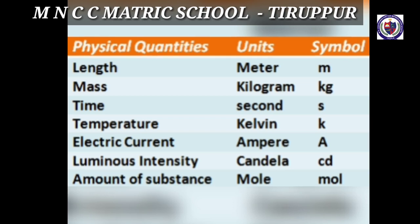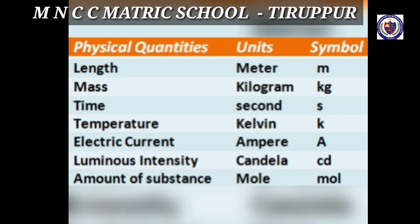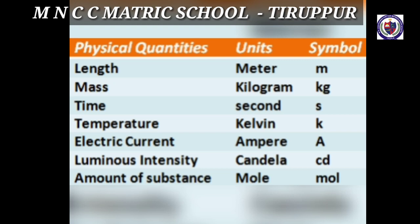The unit of temperature is Kelvin (symbol: K). The unit of electric current is Ampere (symbol: A). The amount of substance is measured in mole (symbol: mol). The unit of luminous intensity is Candela (symbol: Cd).